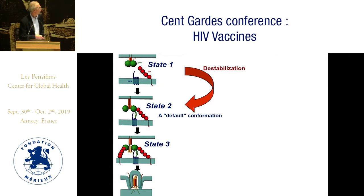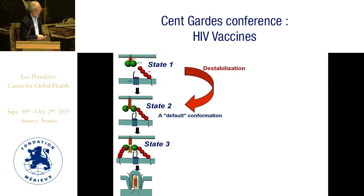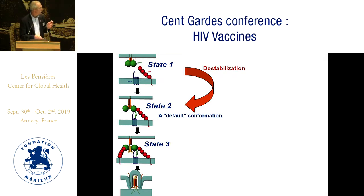Many alterations of state 1 — either amino acid changes in key restraining residues, solubilization in various detergents, or other manipulations — basically result in the envelope glycoproteins assuming this intermediate state 2. Hence we call state 2 a default conformation. It seems that's a conformation the envelope glycoprotein is designed to go into when state 1 is destabilized.